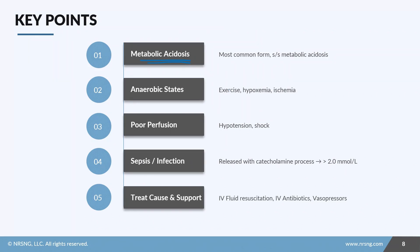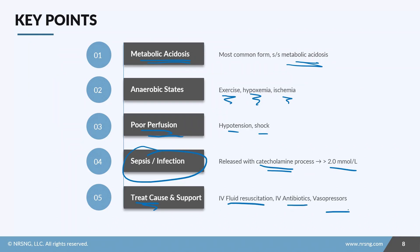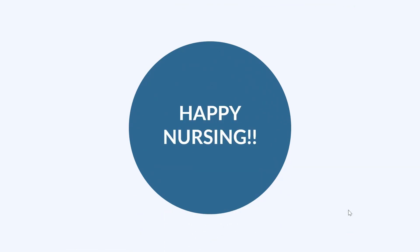To recap: lactic acidosis is the most common form of metabolic acidosis, especially in hospitalized or critically ill patients. Causes include anaerobic states like strenuous exercise, hypoxemia, or ischemia; poor perfusion such as hypotension and shock; and sepsis or infection due to catecholamine release. Any level greater than 2 in the presence of infection is considered indicative of sepsis. Treatment includes supporting airway and breathing, IV fluid resuscitation, IV antibiotics, and vasopressors to restore perfusion and reduce anaerobic metabolism. Those are the basics of lactic acid — happy nursing!